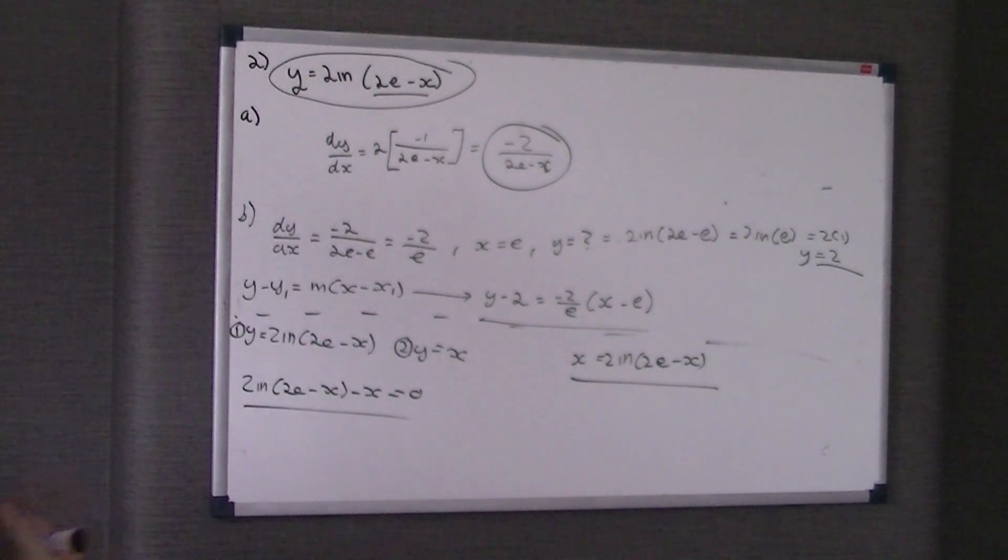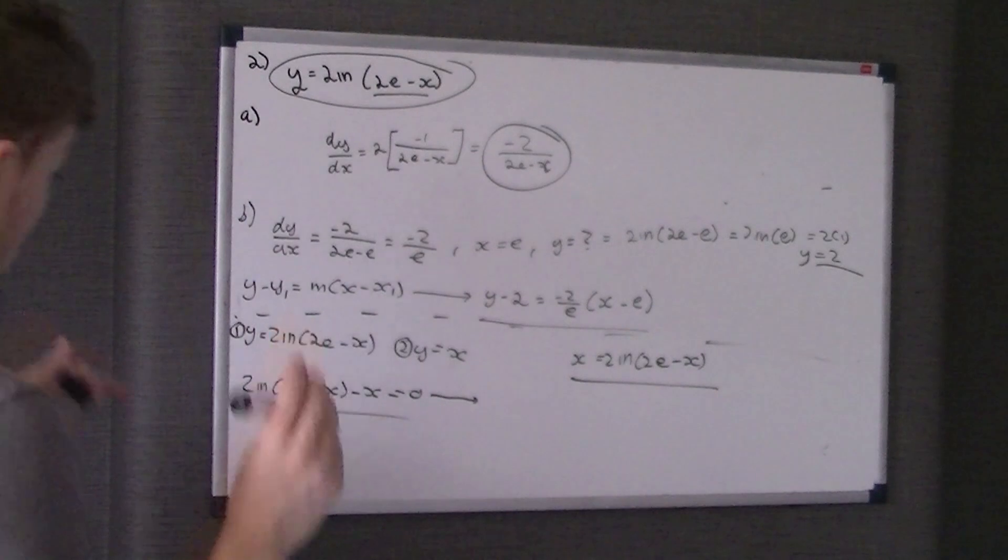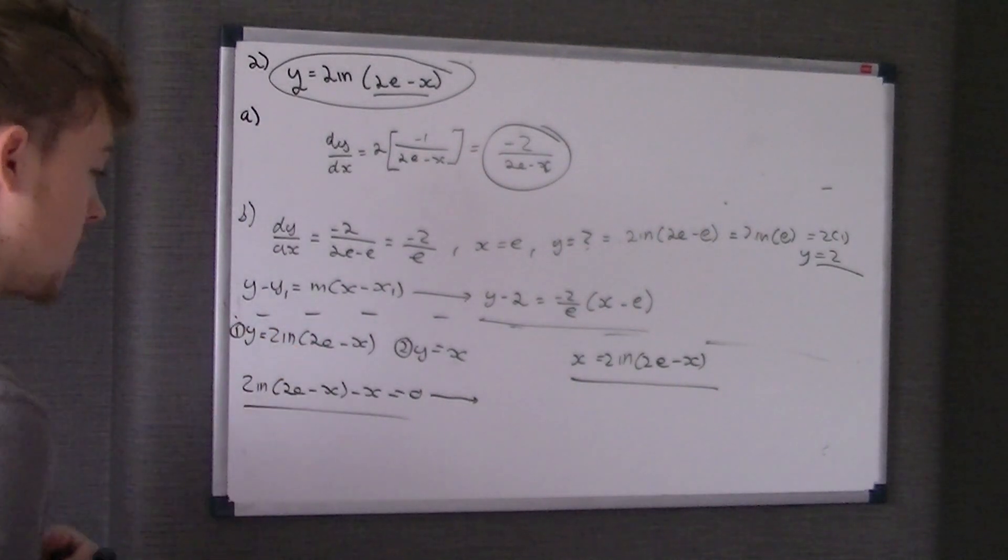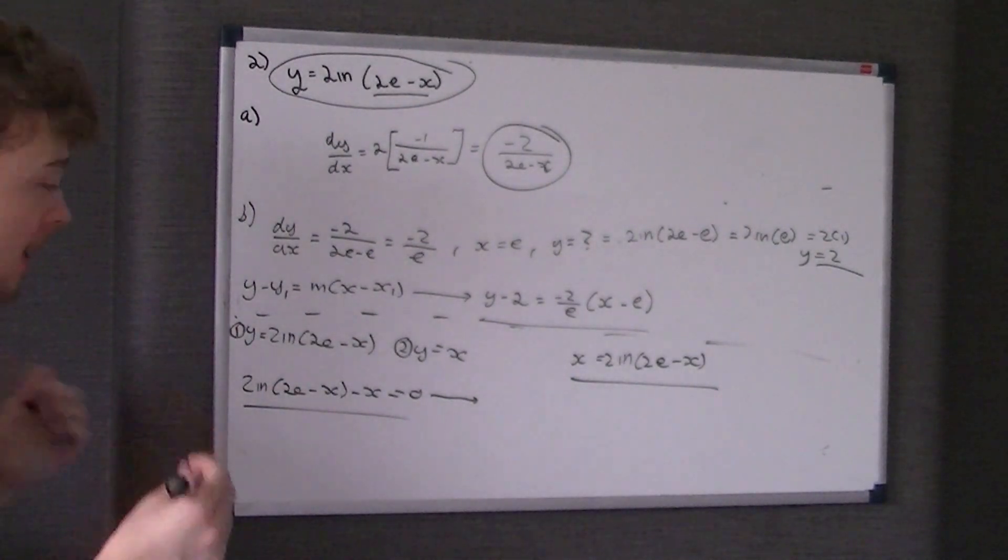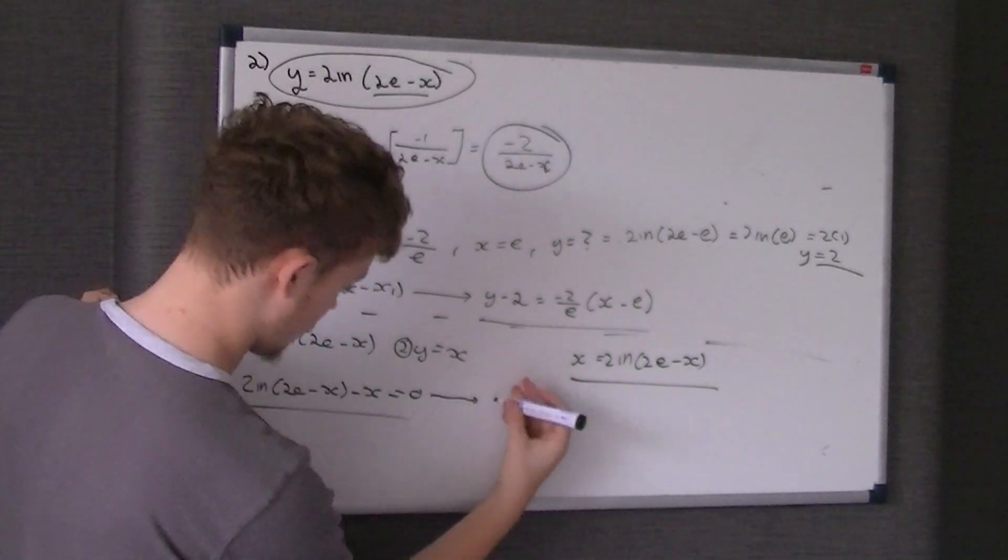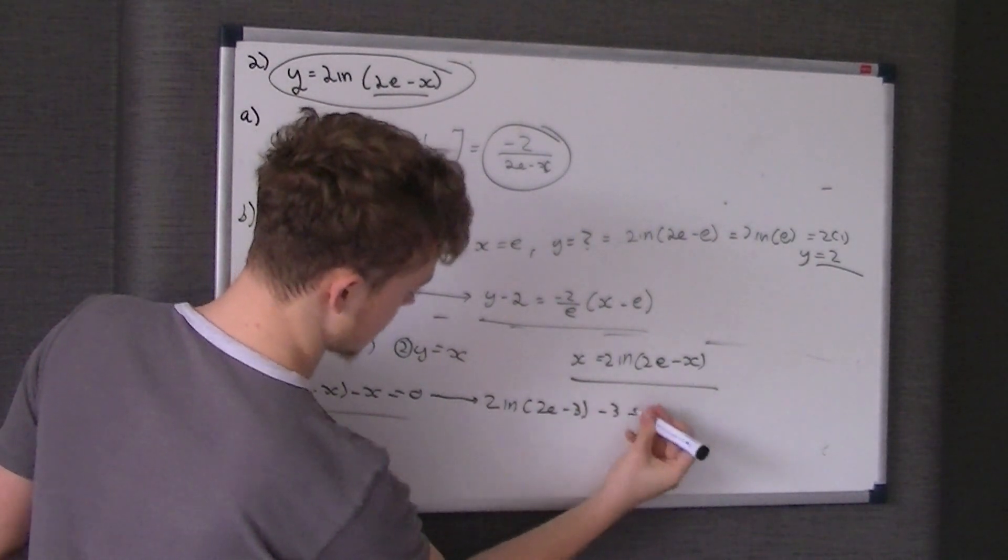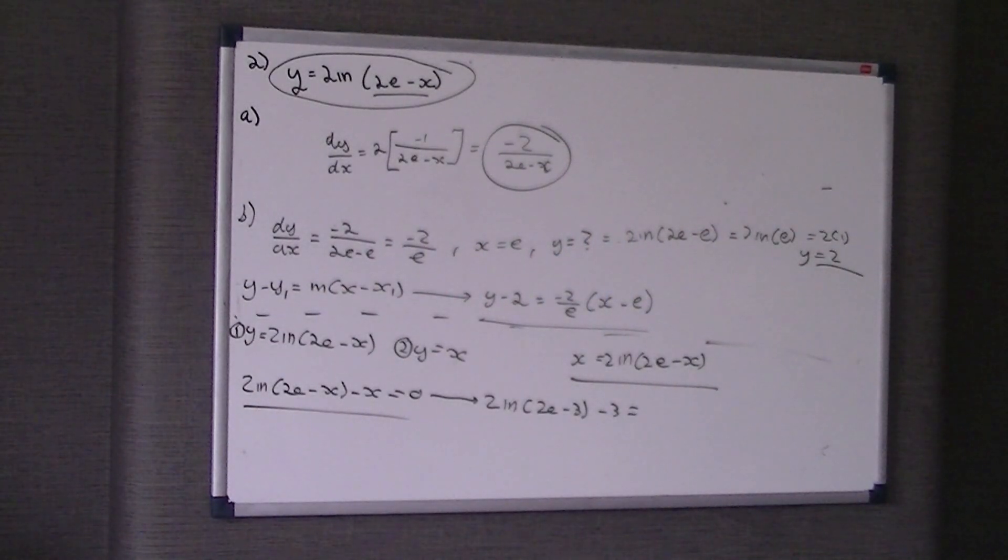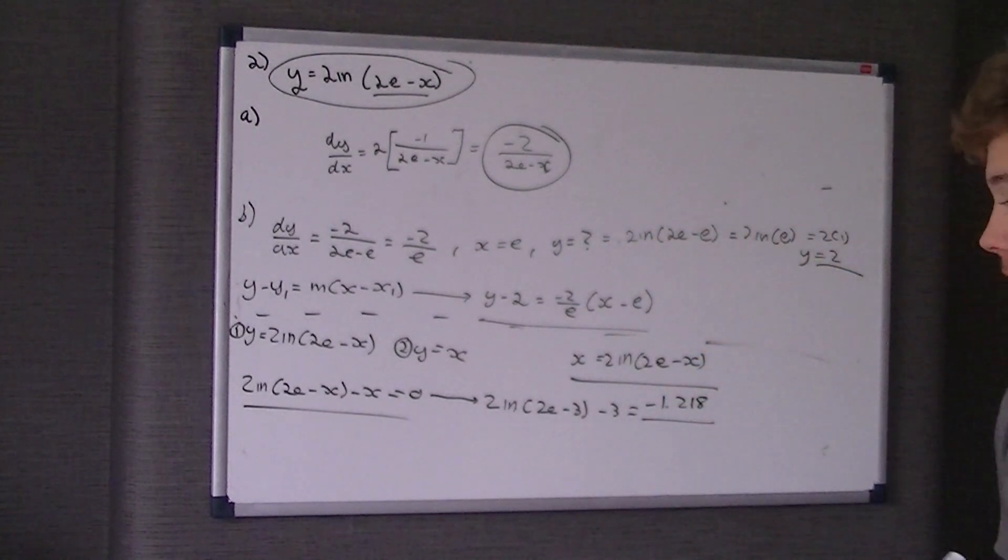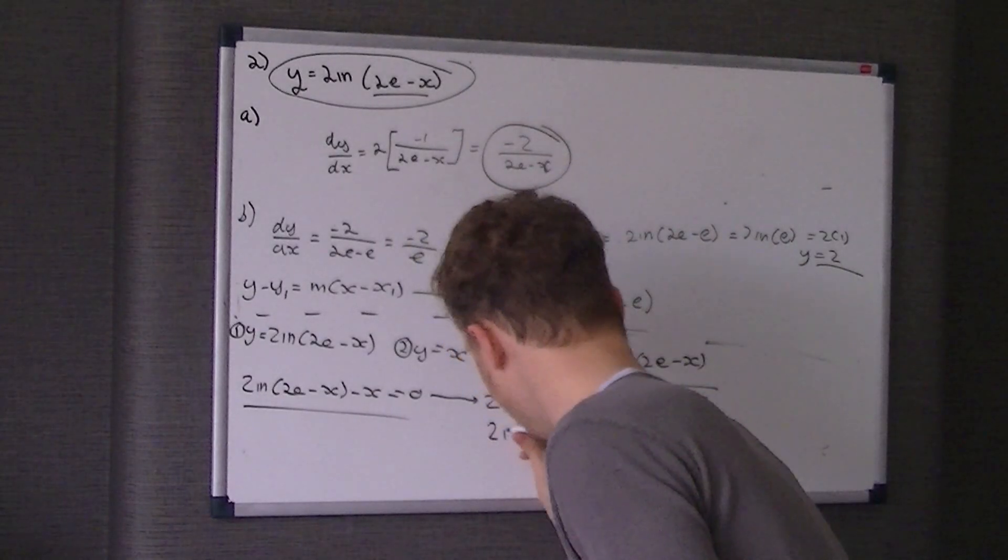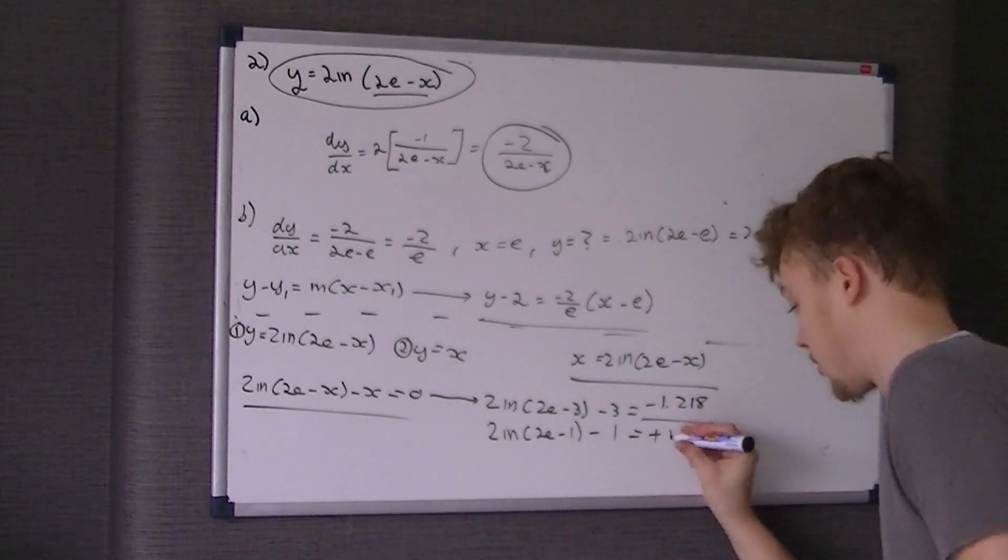Now we need to show it lies between 1 and 3. If we are correct, what we're going to do is sub 3 and sub 1 in, and we should get a change of sign. So what we're going to do is just sub in 3 first. 2 ln of 2e take 3 take 3 is equal, we're not really bothered about what specific number it's equal to, but I put minus 1.218. As long as it's got a minus that's all we're really bothered about.